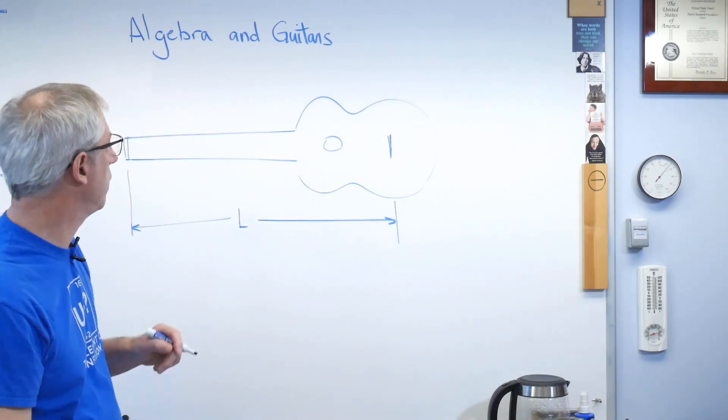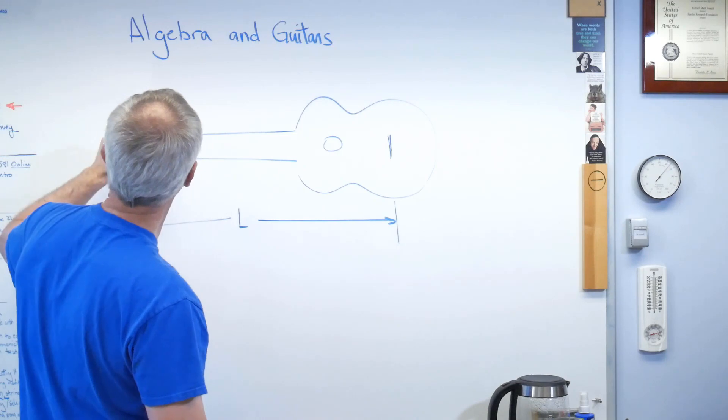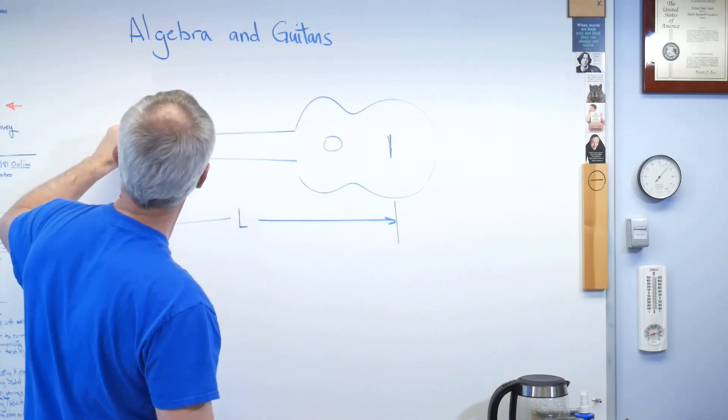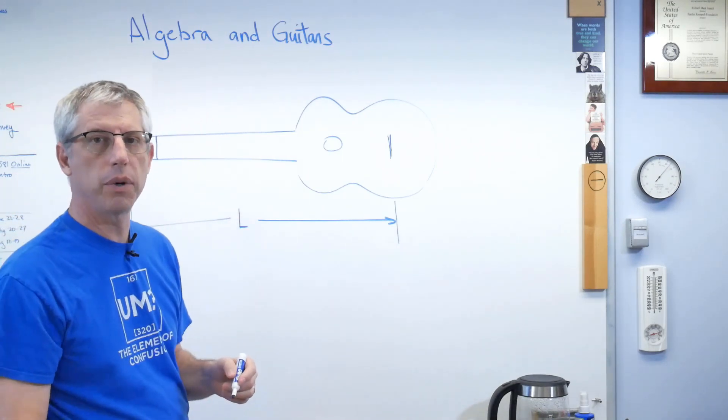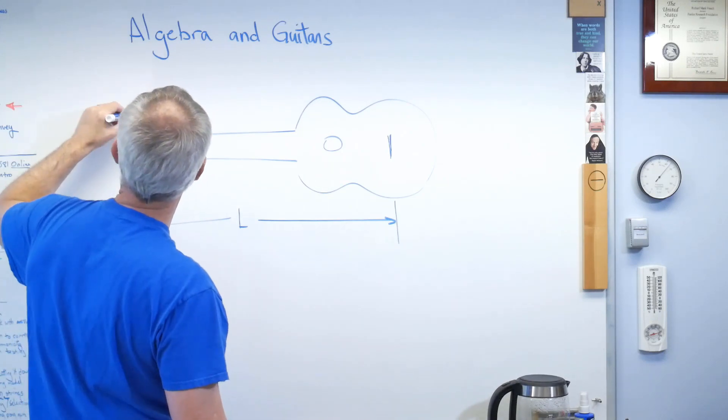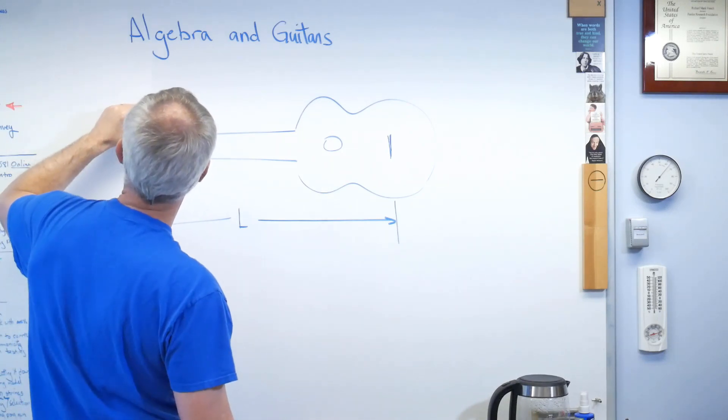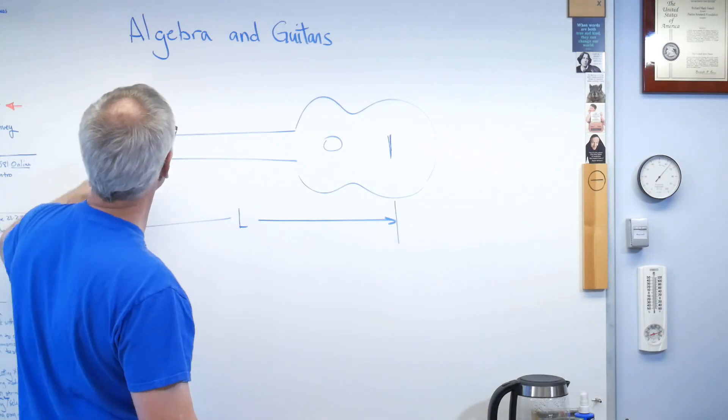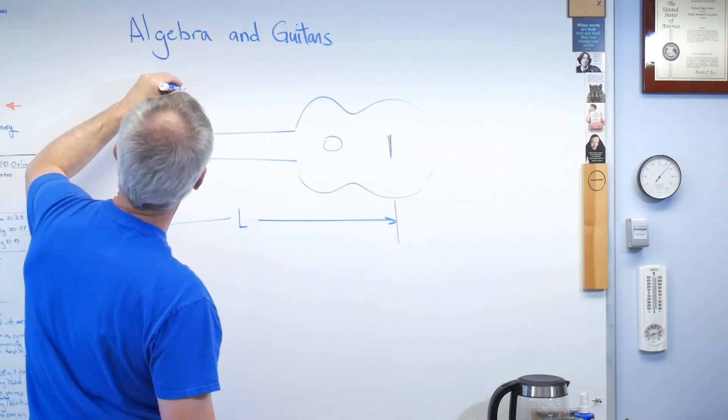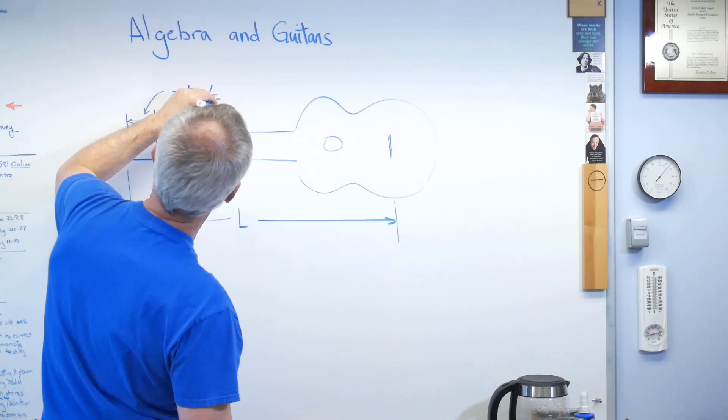That's called the scale length. Well, somebody figured out that if I take that scale length, and I divide it by 18, that's where I put that distance right there, is where I put the first fret. That distance is L over 18.